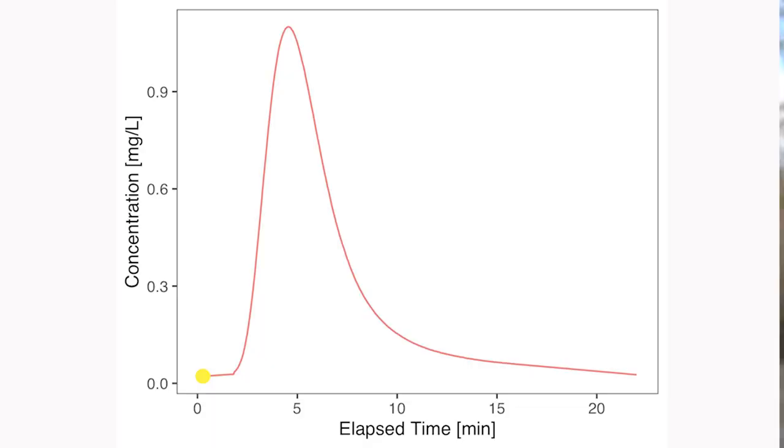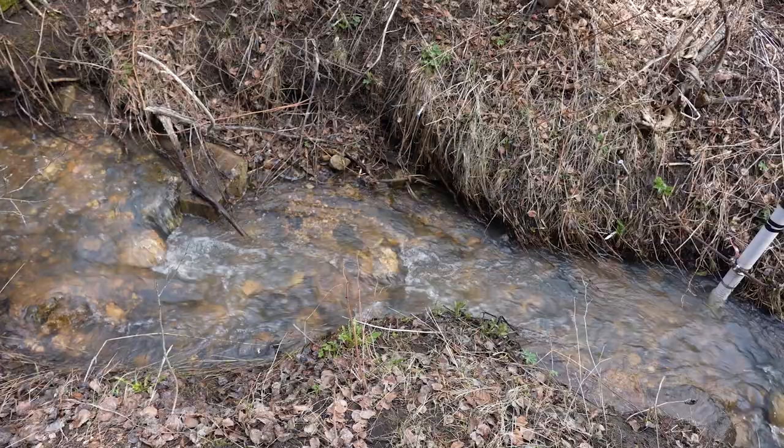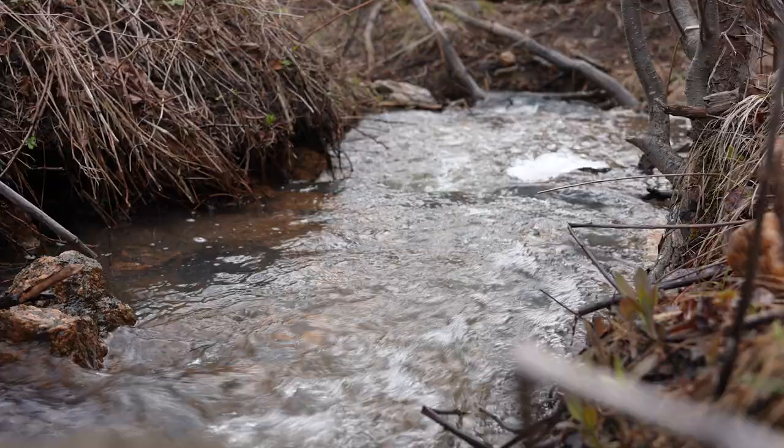In stream tracer experiments we collect breakthrough curves of the tracer concentration downstream. These are temporal records of how that concentration changes at a defined sampling location. Stream tracer injections can be used to determine in-channel transport characteristics such as advection, dispersion, and exchange with in-channel storage dead zones.